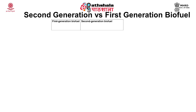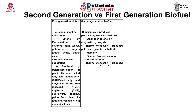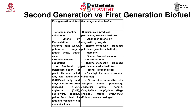Comparing first and second generation biofuel: first generation biofuel are petroleum gasoline substitutes, while second generation are biochemically produced petroleum gasoline substitutes — for example, ethanol or butanol by enzymatic hydrolysis, comparable to ethanol by fermentation of starches. For petroleum diesel substitutes, first generation biodiesel is produced by transesterification of plant oils, known as fatty acid methyl ester or fatty acid ethyl ester, from rapeseed, soybeans, sunflower, and coconut. Second generation biodiesel is produced thermochemically via Fischer-Tropsch diesel or green diesel, using non-edible oils like Jatropha curcas, Pongamia pinnata, or waste cooking oil.